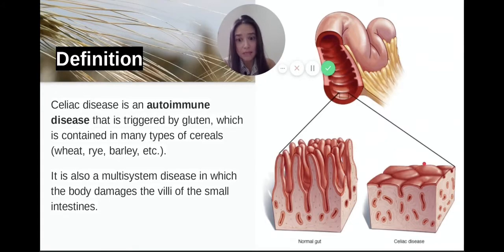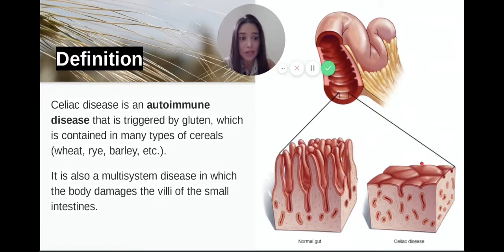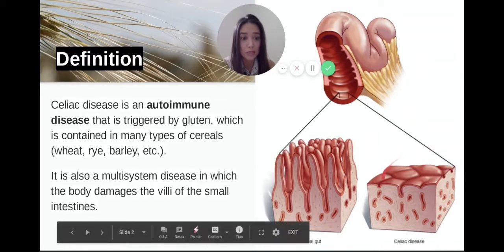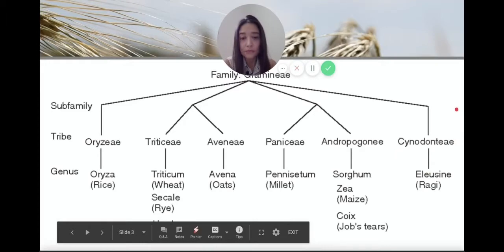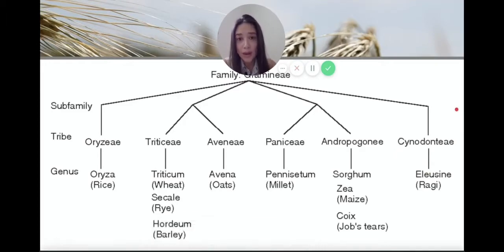It's a multi-system disease in which the villi of the small intestines start to be damaged, as you can see in this picture. It is caused by gluten — that's the main definition.